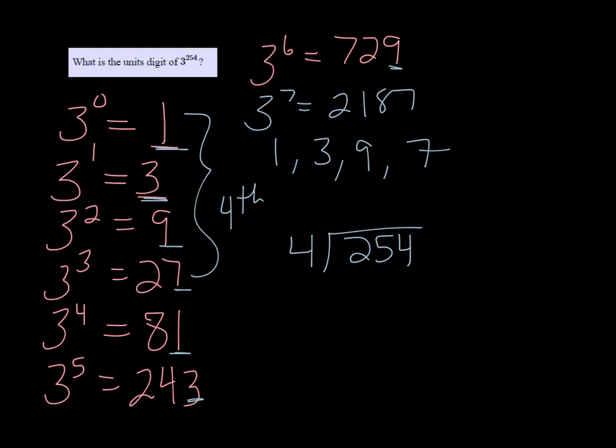So 4 into 25 is 6, 6 times 4 is 24, bring down the 1 and the 4, 4 goes into 14 3 times, 4 times 3 is 12, 14 minus 12 is 2, we get a remainder of 2.